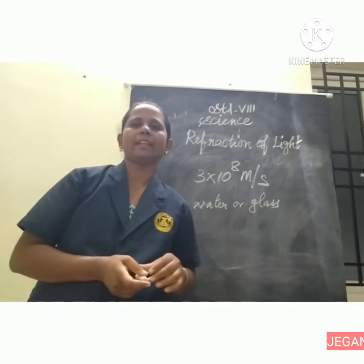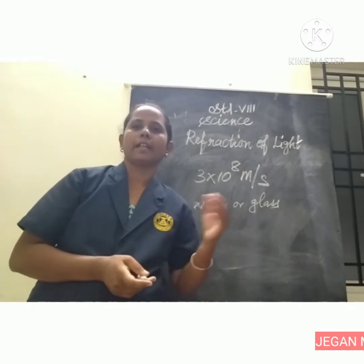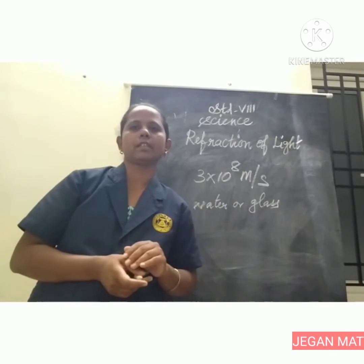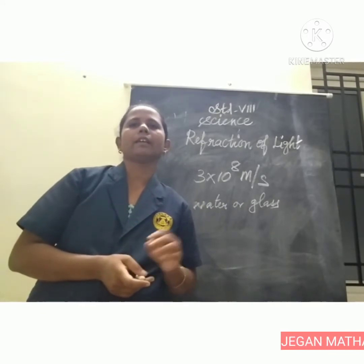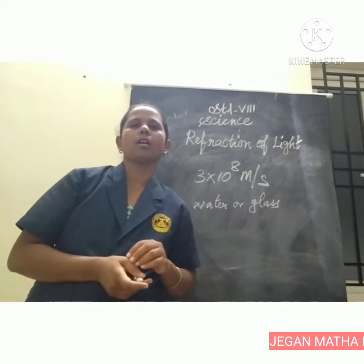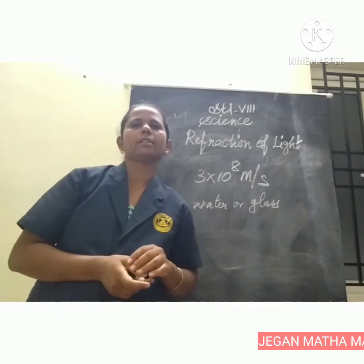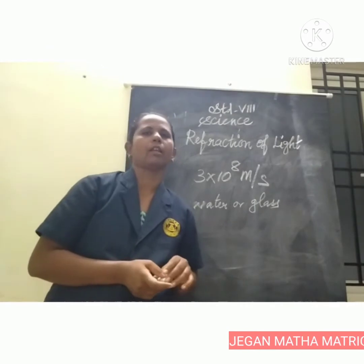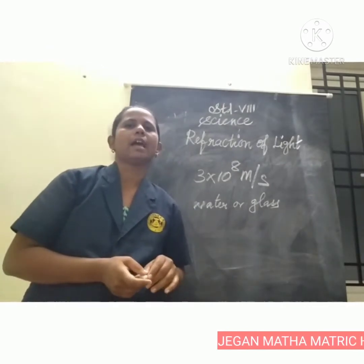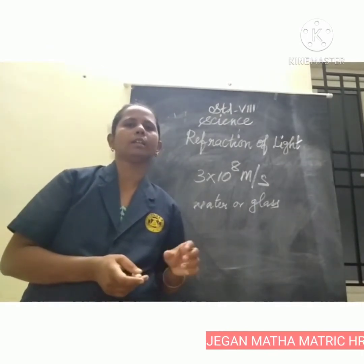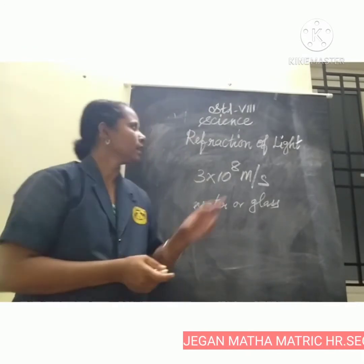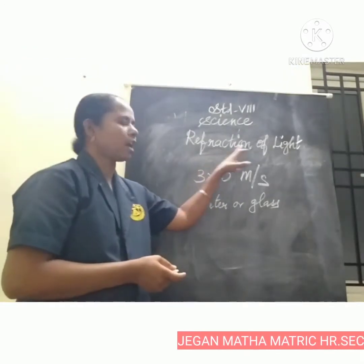So light rays traveling from a rarer medium like air into a denser medium like glass or water are deviated from the straight line. This bending of light about the normal at the point of incidence as it passes through one transparent medium to another is known as refraction of light.